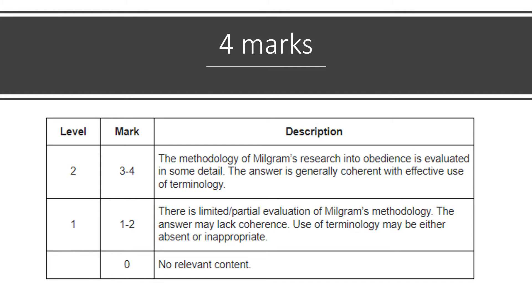Just a reminder — anything four marks and above in psychology, any question you get is put in a level descriptor grid. This one is for evaluating Milgram's research, but it will apply to all evaluation questions. The same words come up in every evaluation level descriptor grid: is it detailed, is it coherent, and are we using effective terminology throughout our answer? So we want detail and depth, coherence and flow, and keywords throughout to get a level two response.